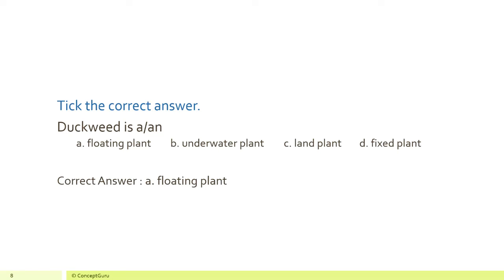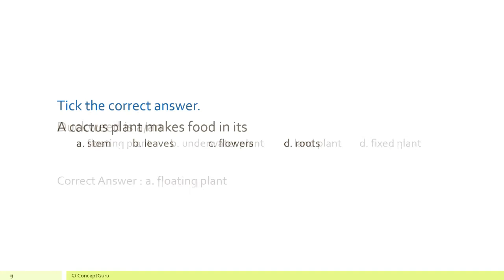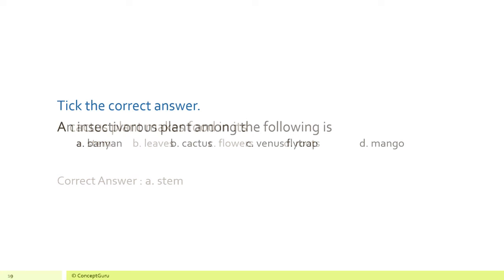The right answer for duckweed is (a) a floating plant. Next question: a cactus plant makes its food in its (a) stem, (b) leaves, (c) flowers, or (d) roots. The right answer is (a) stem. An insectivorous plant among the following is (a) banyan, (b) cactus, (c) venus flytrap, or (d) mango. The right answer is (c) venus flytrap.